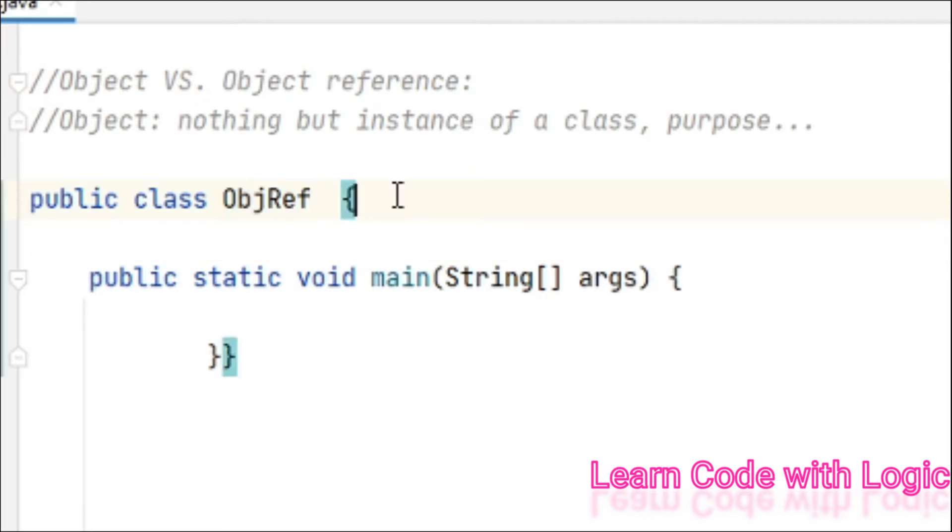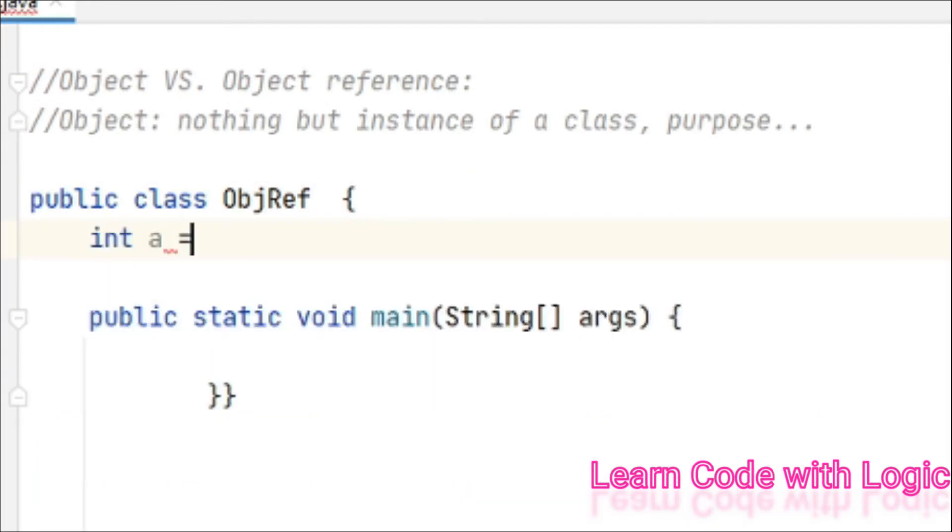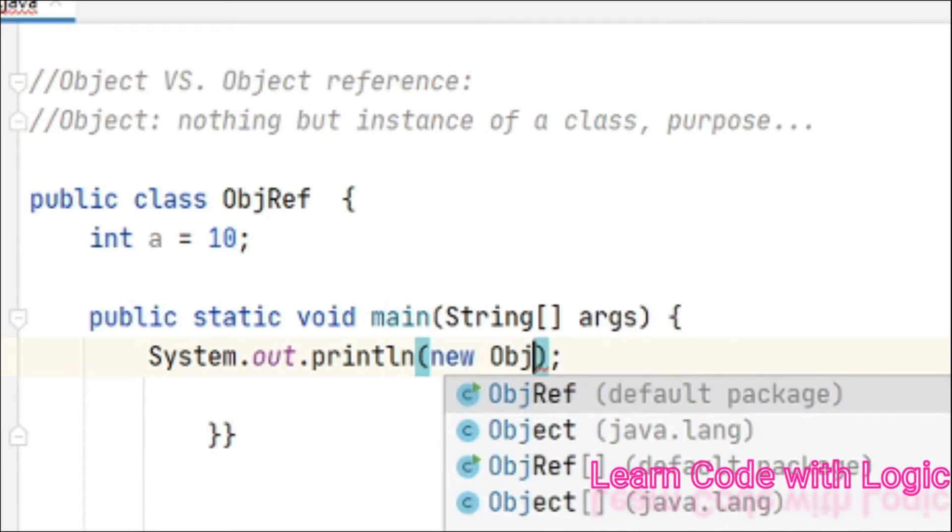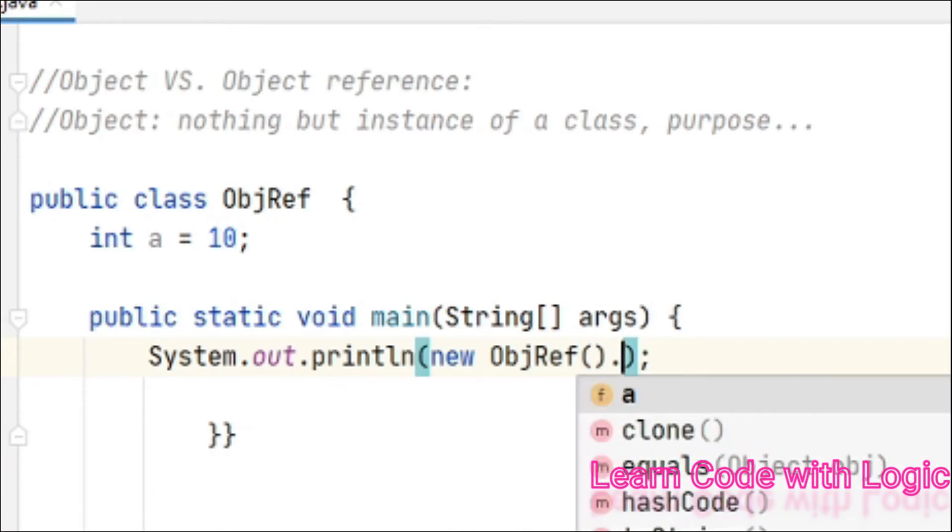First of all, I created a class, then one variable int a equal to 10, print statement. Now I am creating the object. This is how we need to call the instance variable. This is the object and this is calling variable. Let's save the code and run it.